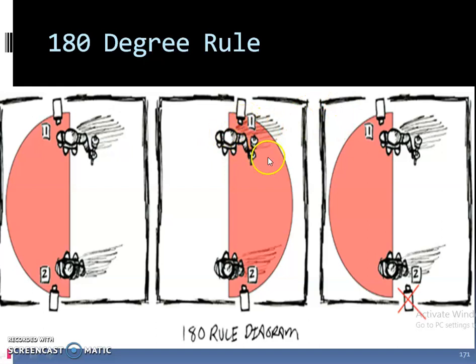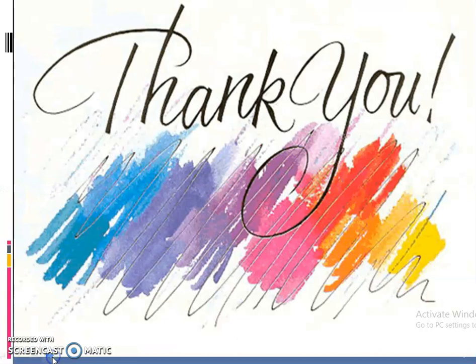In the diagram, camera 1 and 2 are within the 180 degrees. If the camera is placed on the other side, it has crossed 180 degrees, and this is wrong. And here I stop — see you in the next class. Thank you.